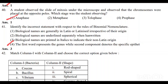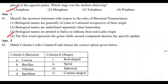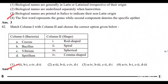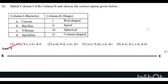Question number 41: Identify the incorrect statement with respect to binomial nomenclature. Option 3 — that biological names are printed in italics to indicate their non-Latin origin — is incorrect. So Option 3 is the correct answer here as the incorrect statement.